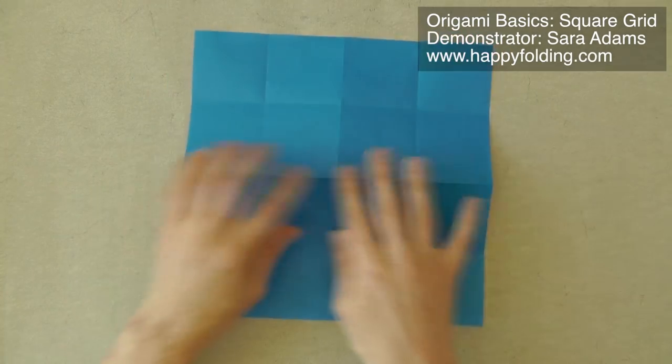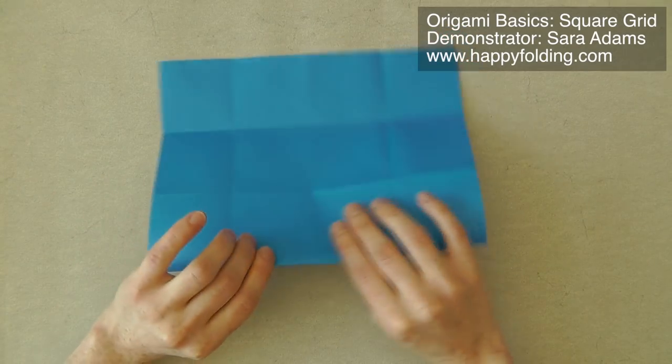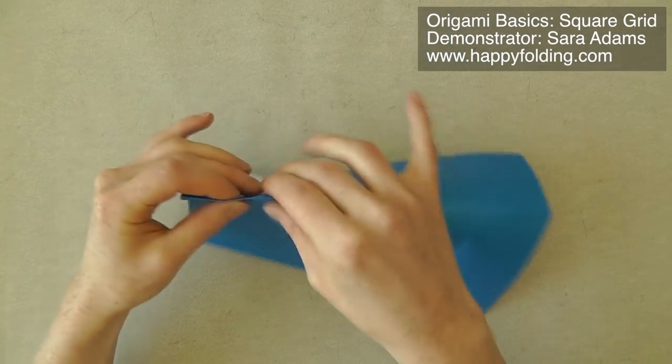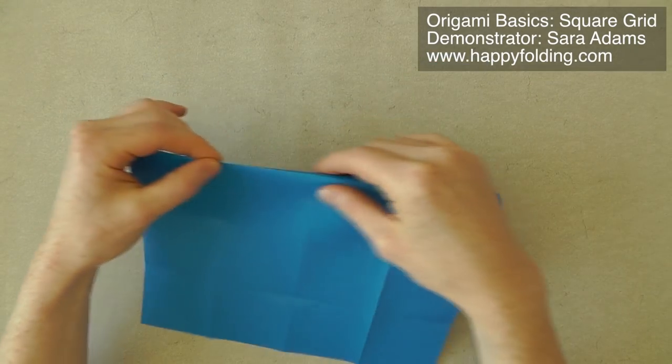So now you can see there's four divisions on each side. We're just going to reverse it, making the mountain folds too. And in the other direction too.